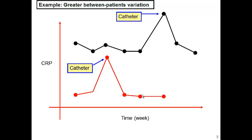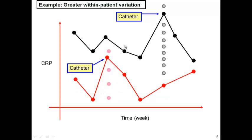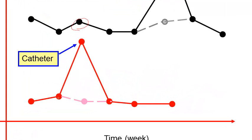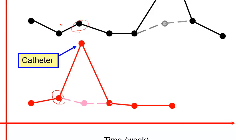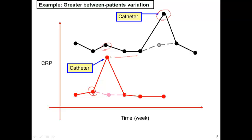In order to tell SPSS that these observations come from the same patient, we somehow have to model between-patient variation. By introducing that difference between patients and removing between-patient variation, the analysis can focus on within-patient variation. When considering whether catheter has an impact on CRP, you don't compare an observation from one patient to an observation from another patient — you compare that observation to the rest of that same person's observations.